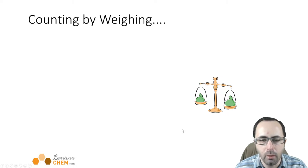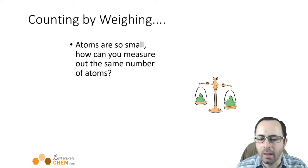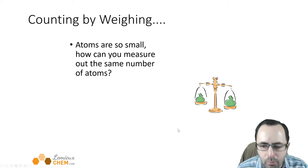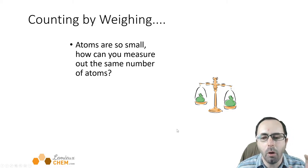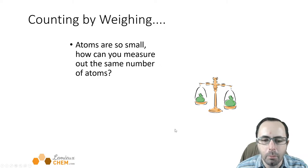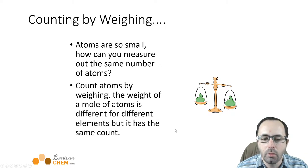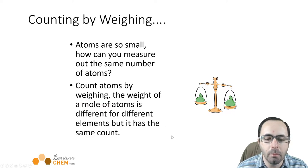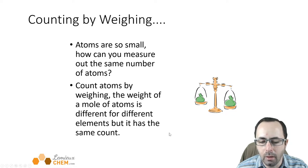So how do we count by weighing? Atoms are so small you can't just get out tweezers and count them one by one — they're too small to be seen. So we count atoms by weighing things. The weight of a mole of atoms is different for every element, but it will have the same count.